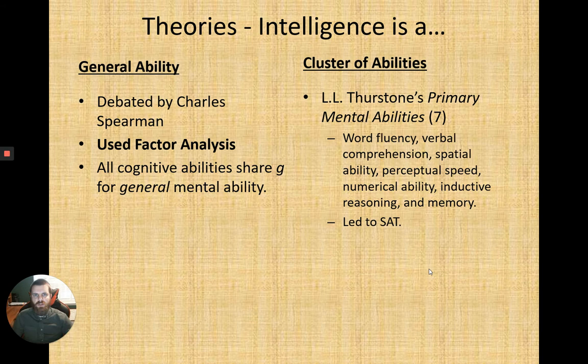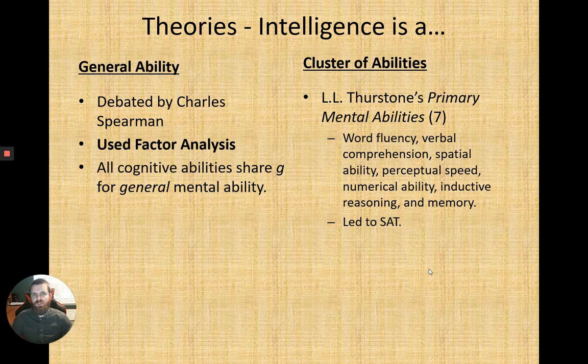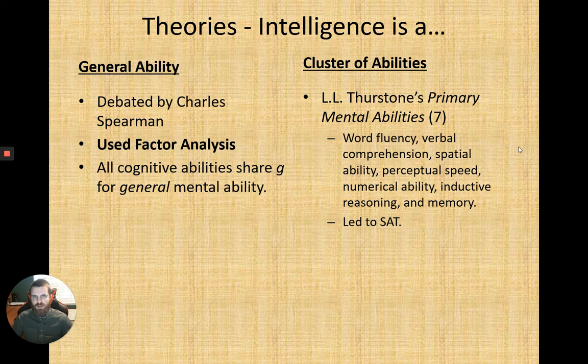The first couple of slides look at breaking down models and theories about intelligence. The first is called the factor analysis version of intelligence, also sometimes called G. On the other side we have L.L. Thurston's primary mental abilities — a cluster of abilities for intelligence used to create standardized testing, particularly the ACT and SAT, looking at certain aptitudes and abilities.